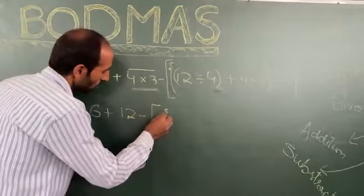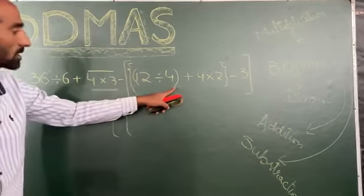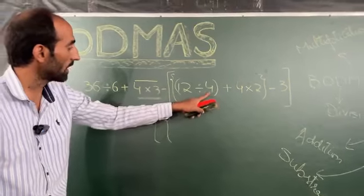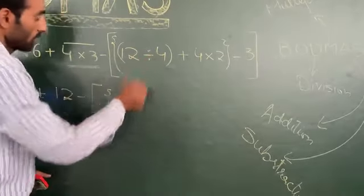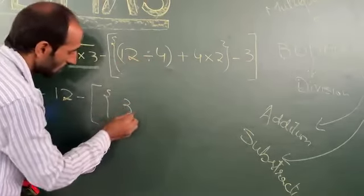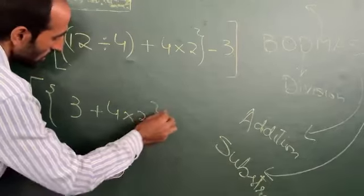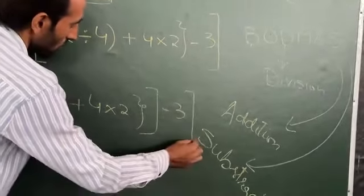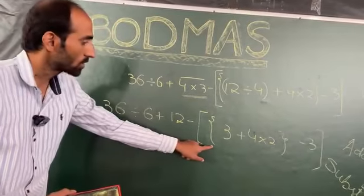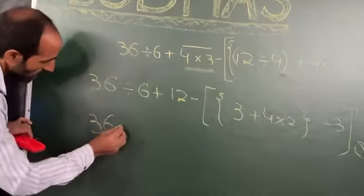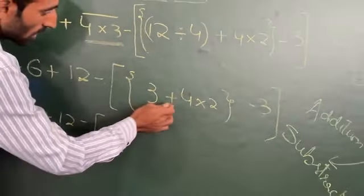Now we will go through this. In this expression, we are having three brackets. First we will eliminate the parentheses, or short brackets. In there we see 12 divided by 4, so we divide it: 12 divided by 4 equals 3. We eliminate the short bracket. Then in the second step we will eliminate the middle bracket, writing the rest as it is: 36 divided by 6 plus 12 minus long bracket, 3 plus 4 into 2.